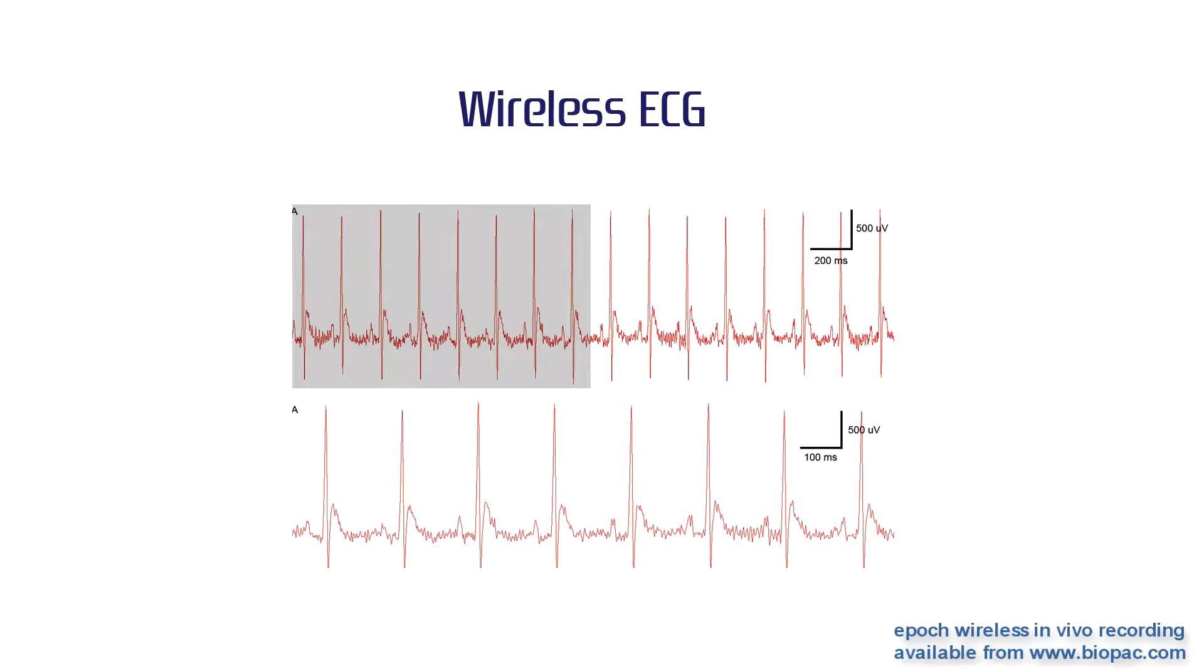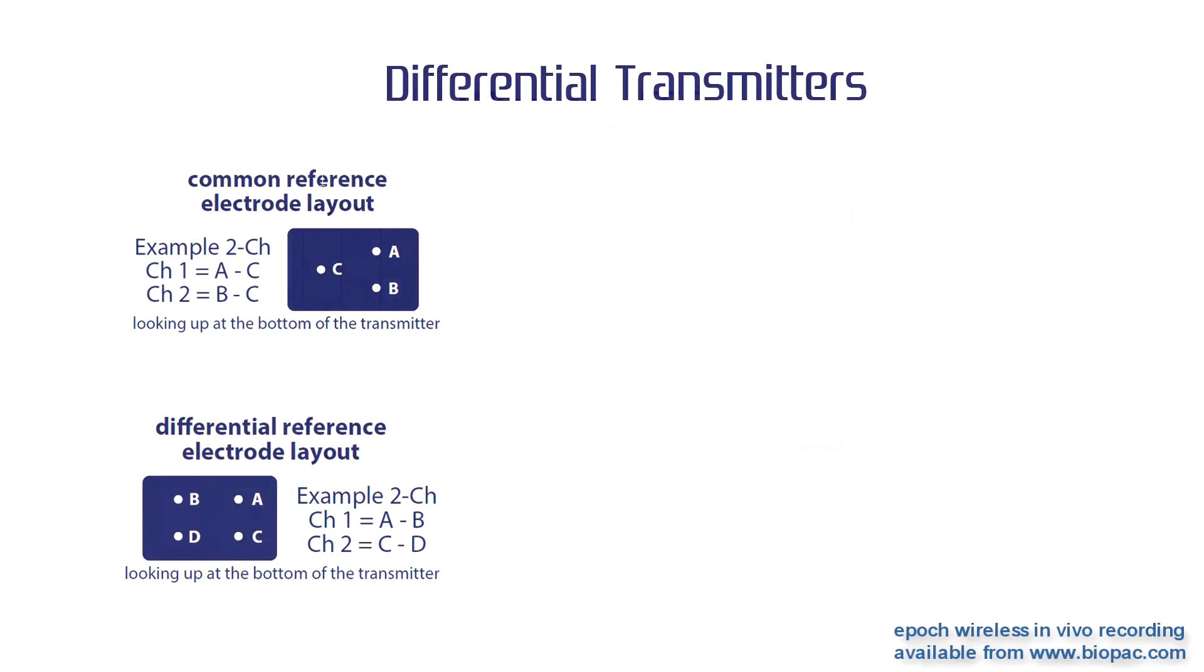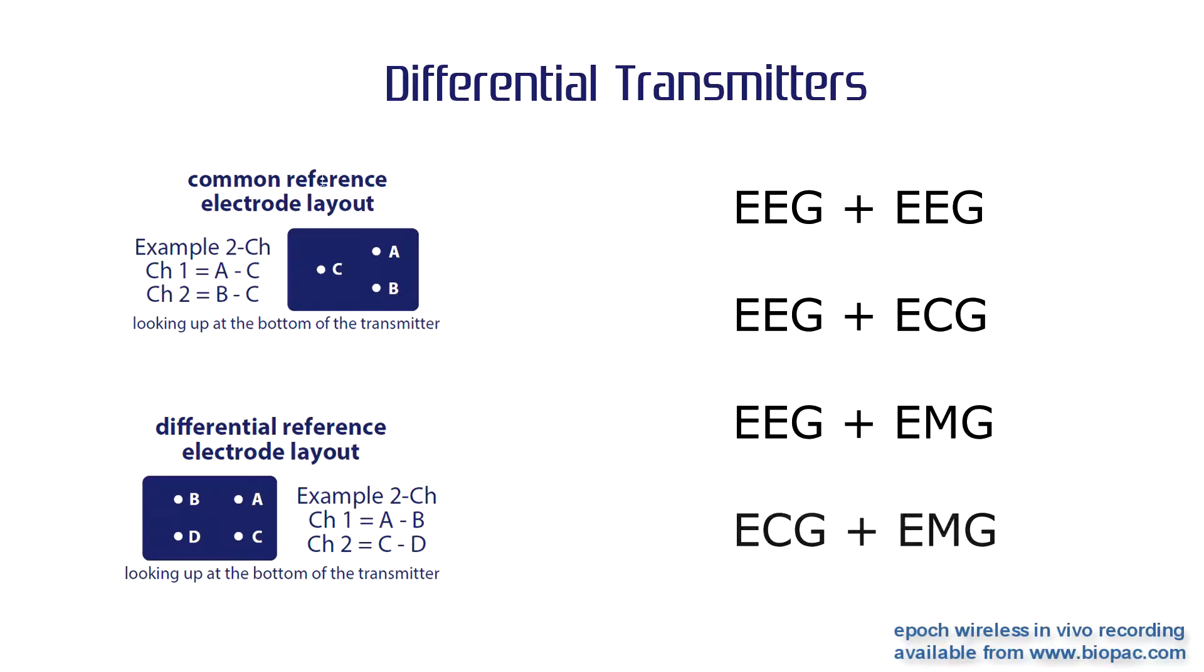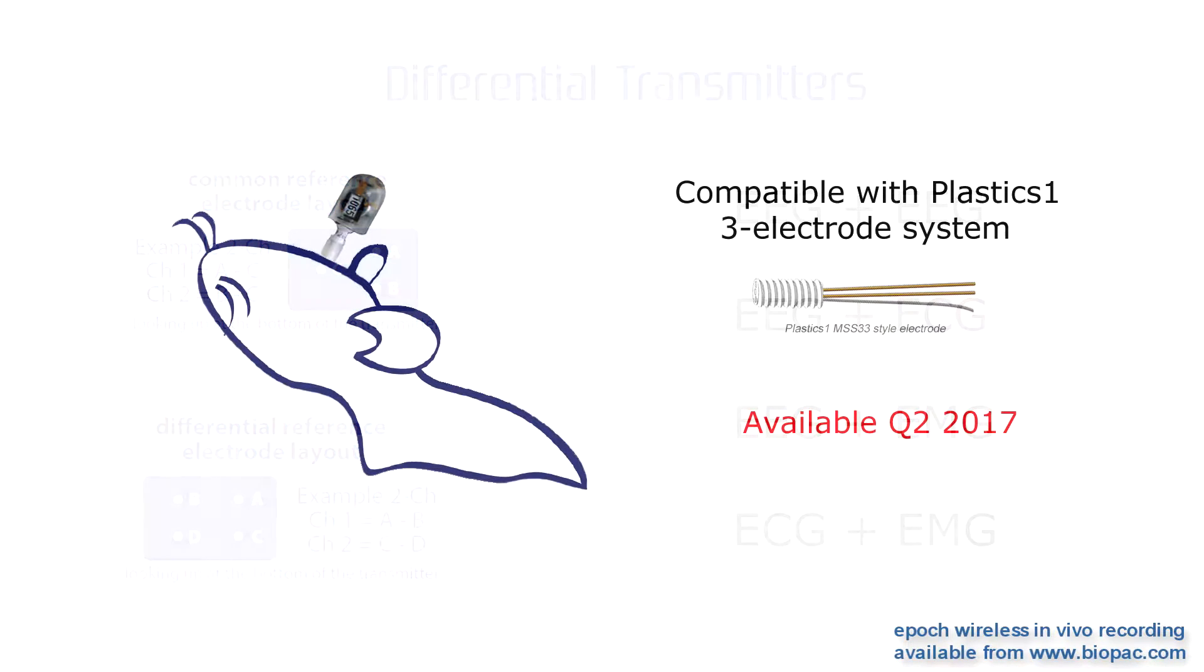Wireless ECG transmitters are single-channel. New differential transmitters record 2 different biopotentials with their own references. New reusable transmitters can be activated and deactivated for use multiple times in multiple animals.